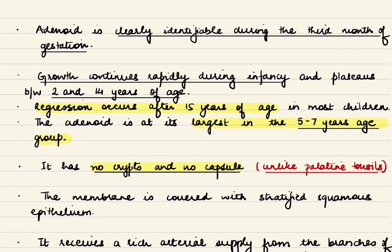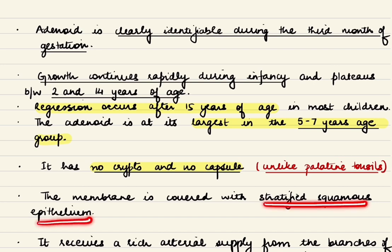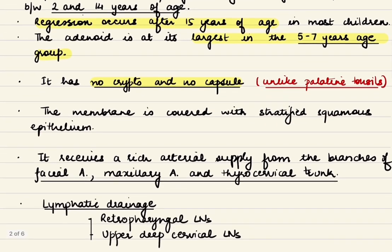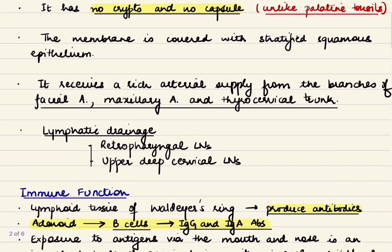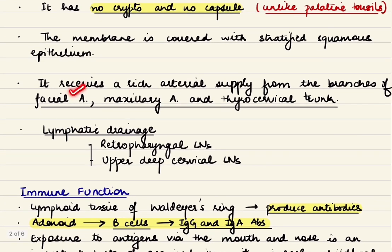In contrast to the palatine tonsils, the adenoid has no crypts and no capsule, and it is covered by stratified squamous epithelium. It receives a rich arterial supply from branches of the facial artery, maxillary artery, and the thyrocervical trunk, with lymphatic drainage to retropharyngeal lymph nodes and the upper deep cervical lymph nodes.